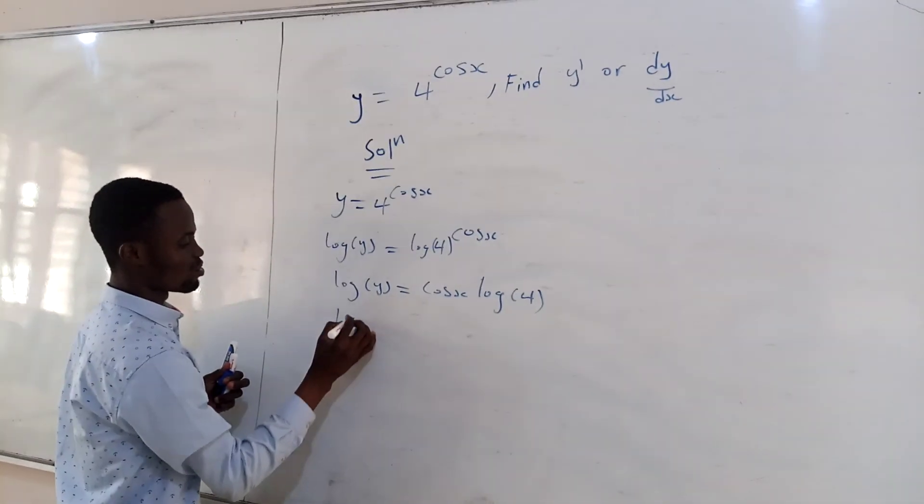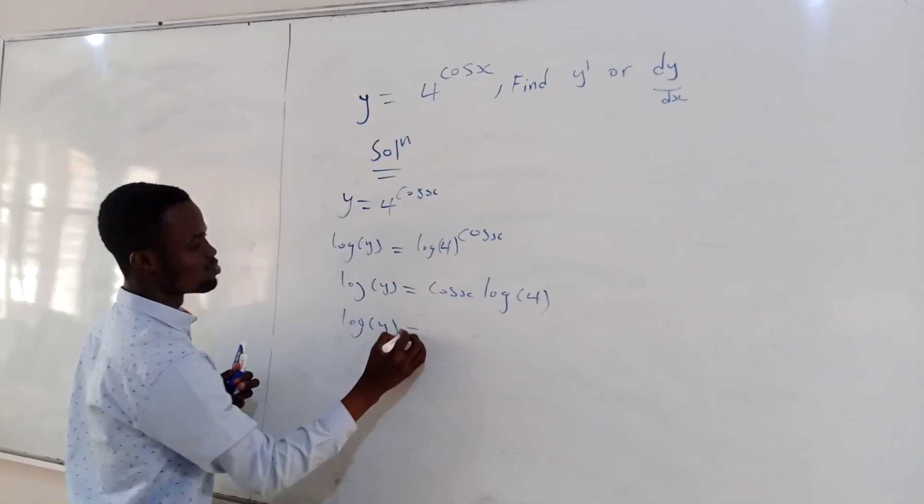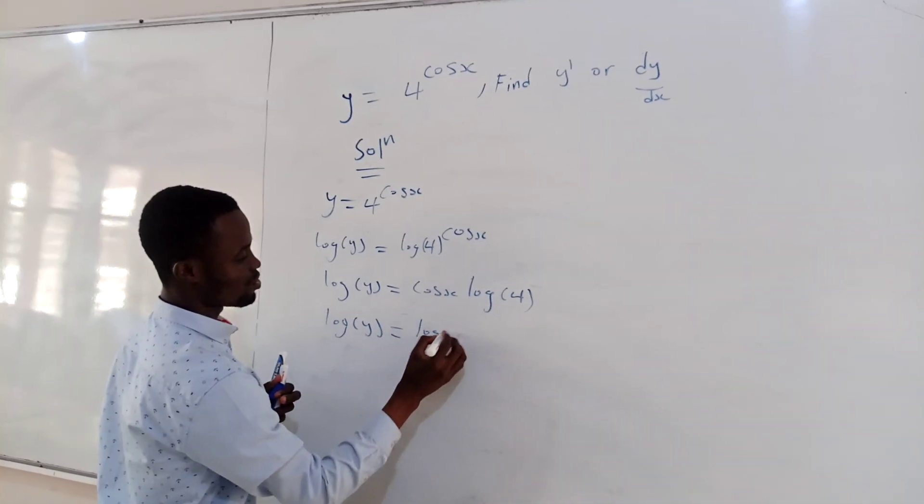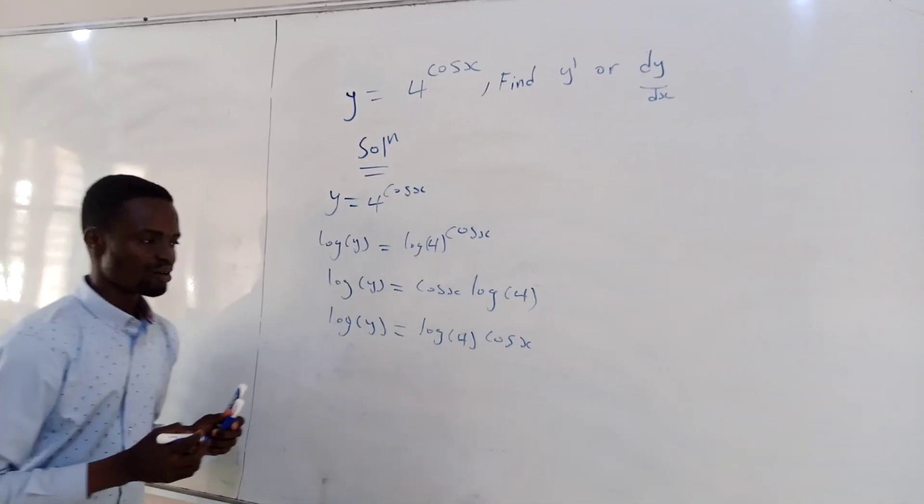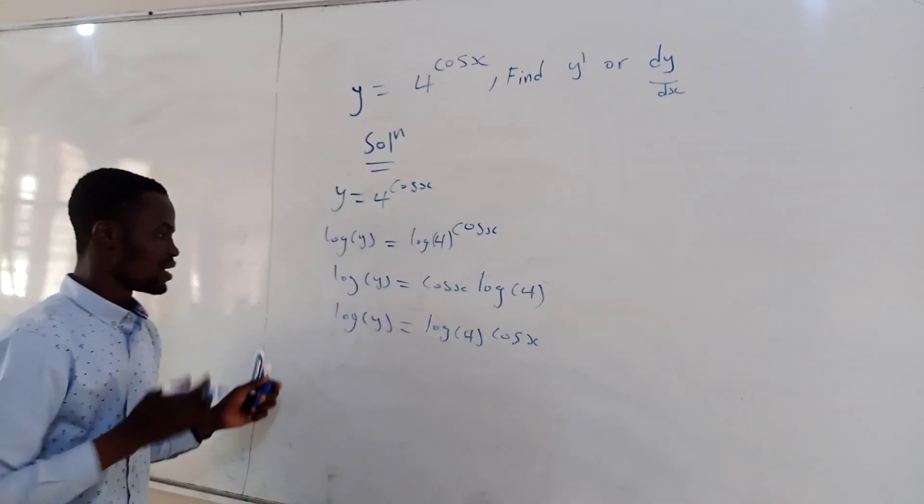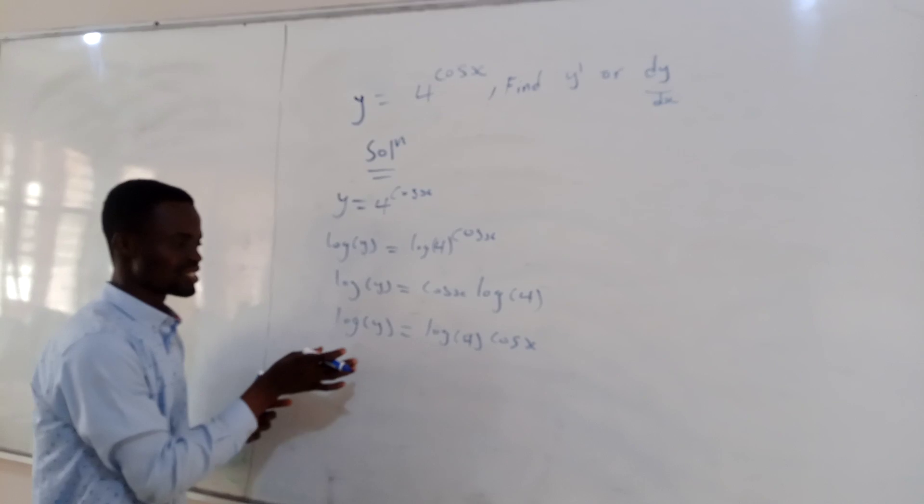You can rewrite it as log y equal to log 4, then cos x. Okay, so from here, you have to differentiate both sides, the left hand side and the right hand side.